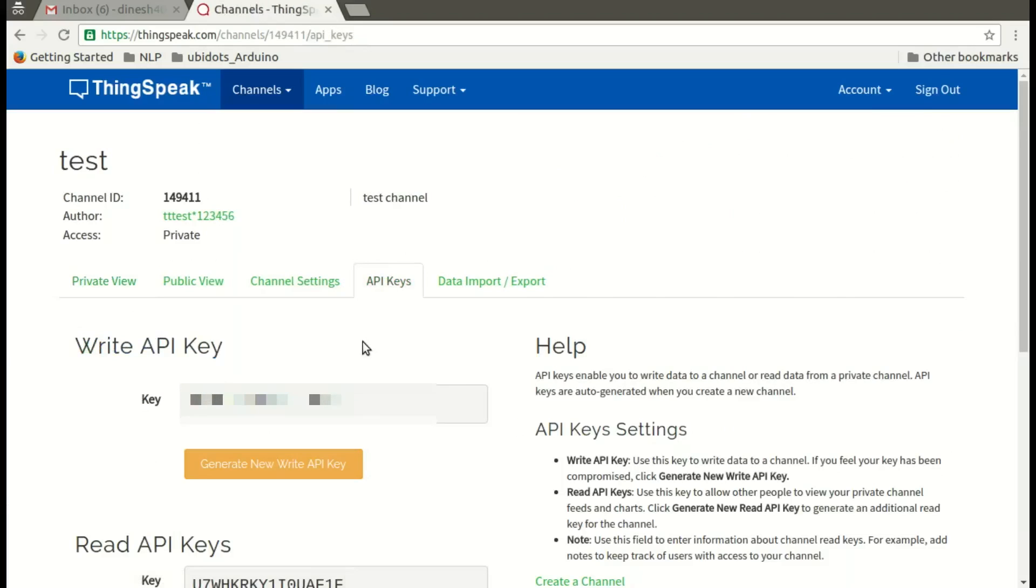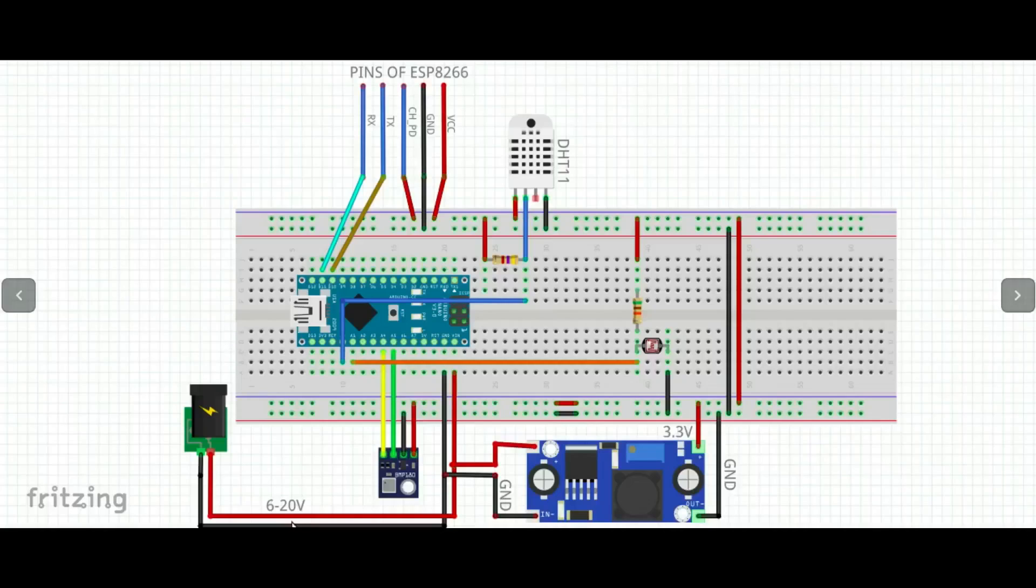Next we'll look at the schematic of our personal weather station. Connect your 6 to 20 volt supply to Vin pin of Arduino Nano and positive input pin of our LM2596 based voltage regulator. We'll set it to 3.3 volt. For BMP180 connect VCC and ground to 3.3 volt and ground rail.